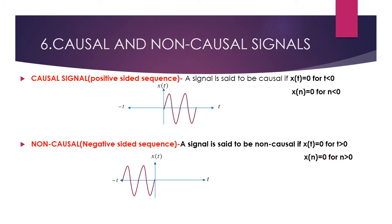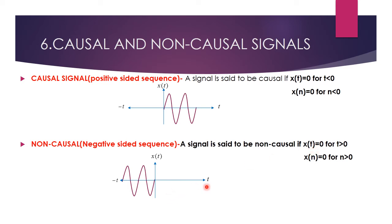Next, we are going to see causal and non-causal signals. A causal signal has only a positive-sided sequence — it satisfies x(t) = 0 for t < 0 for continuous time, and x(n) = 0 for n < 0 for discrete time. A non-causal signal is a negative-sided sequence — we have values only at the negative side. The condition is x(t) = 0 for t > 0, and x(n) = 0 for n > 0.